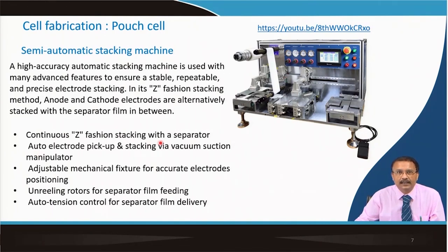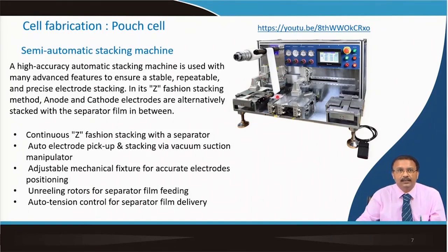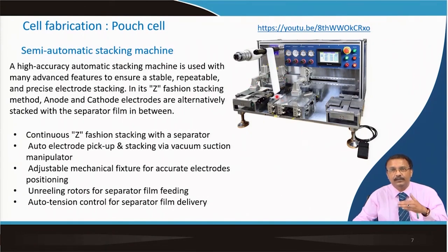It is a continuous jet-fashion stacking with separator. The die-cut electrodes with copper and nickel tabs already attached are placed in the machine, which has a robotic hand to pick them up and stack. Unrolling rotors feed the separator film in between, and the tension needs to be controlled via a PLC board. You can program the tension, the number of stacks, and the machine will keep on stacking one after another with the separator in between.